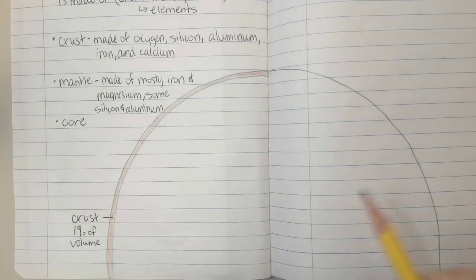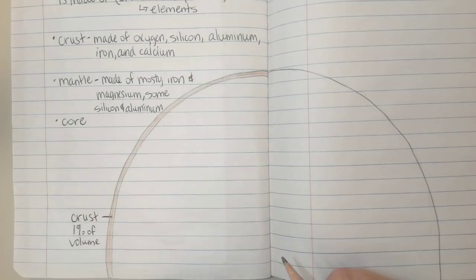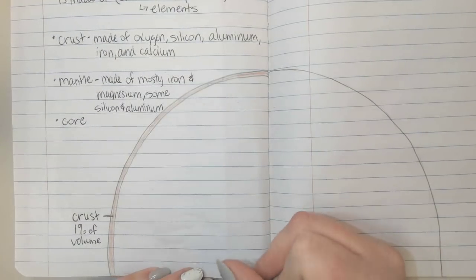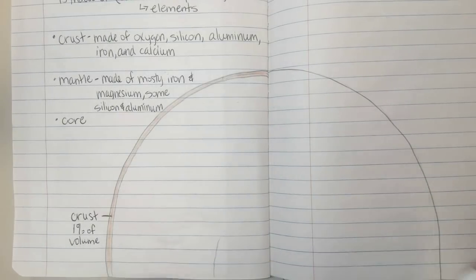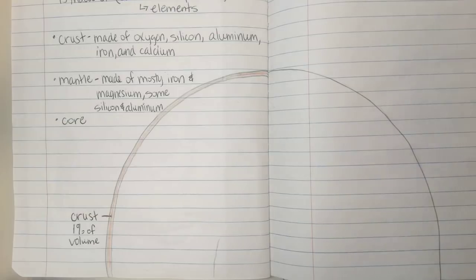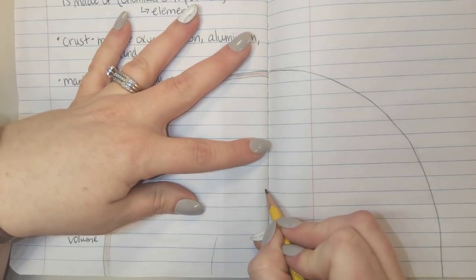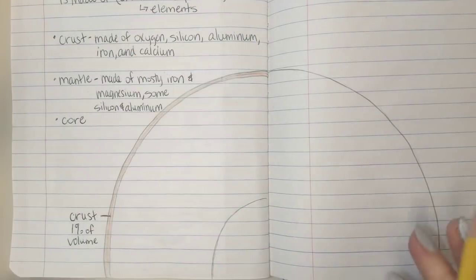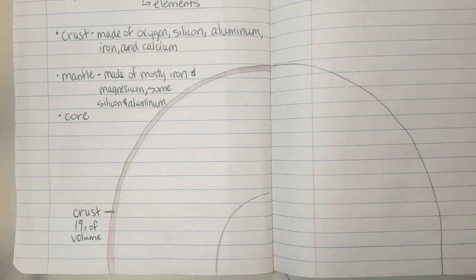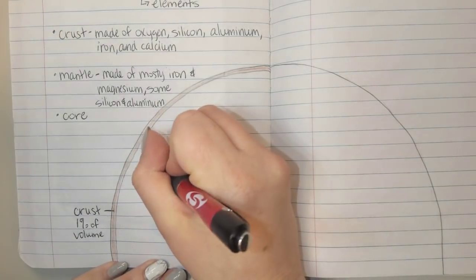When I draw it down at the bottom, this is going to be the biggest chunk of this model. The mantle is 84% of the volume of the Earth, so it's much bigger than the crust and even the inside layer. I'm going to go ahead and divide it right about here. We're only writing on page 2 right now. I'm going to go ahead and label this as the mantle.